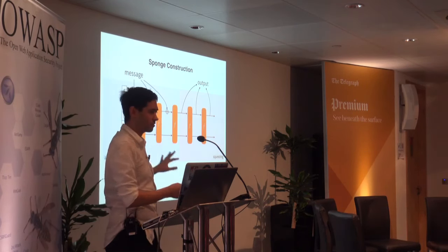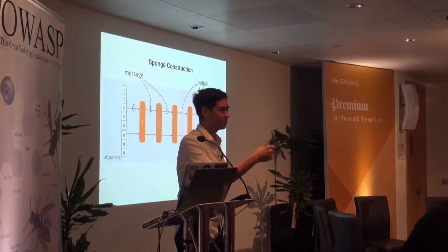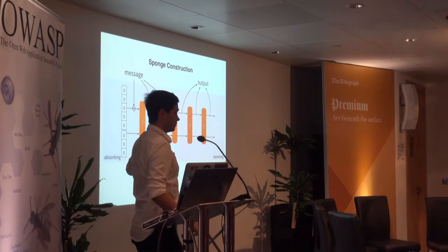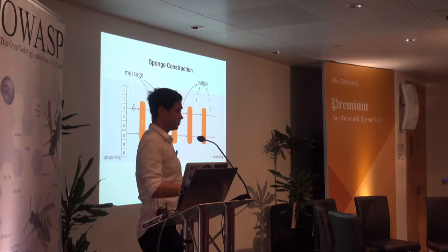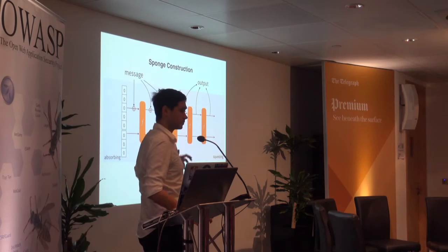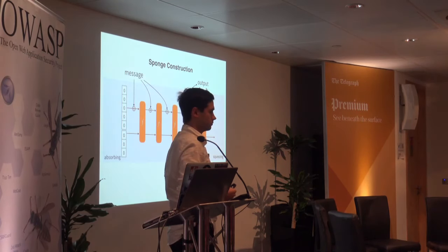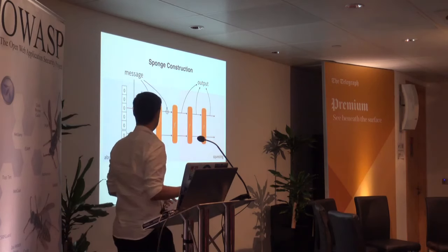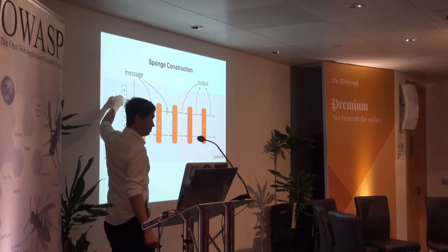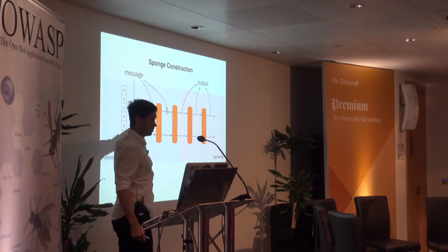Question from the audience: is the message always the same each time? No — if the public part is 5 bits and your message is 10 bits, you split the message in two. You XOR the first 5 bits in the first step, then the next 5 bits in the second step, and you're done absorbing.